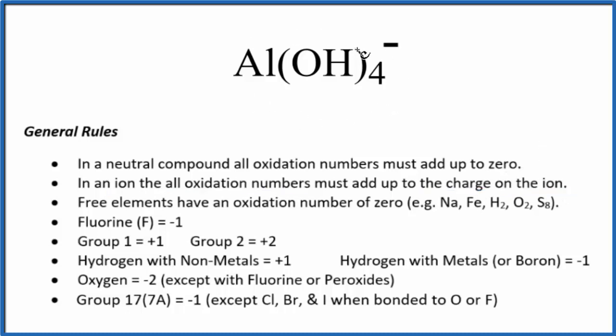Next, when we look at this, aluminum normally has an oxidation state of +3, but it can have other oxidation states, so let's call it X. We do know that oxygen is almost always -2, and hydrogen, when bonded to nonmetals like oxygen, is +1.